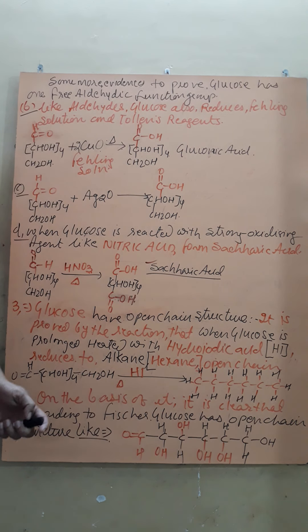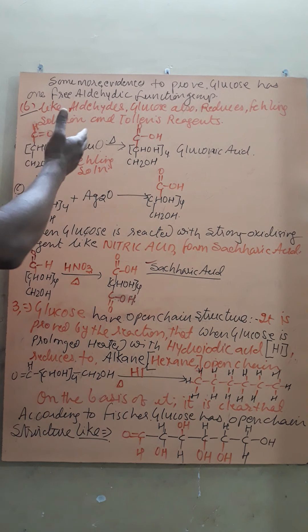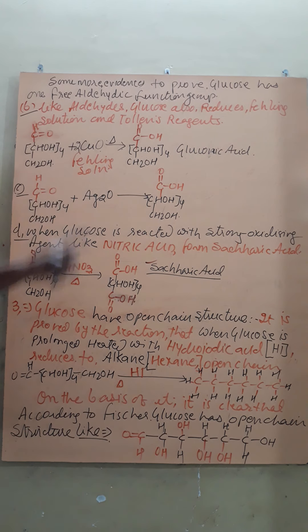It is related to the fact that any aldehyde group containing compound can reduce Fehling's solution and Tollen's reagent. Similarly, glucose also reduces Fehling's solution.